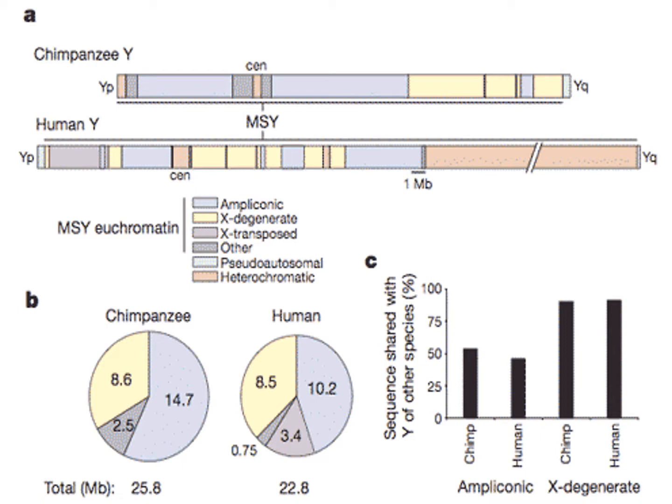Given the standard evolutionary model of origins, it is indeed rather stunning to consider that the human Y chromosome looks just as different from the chimp as the other human chromosomes do from the chicken. Obviously, the believer in mainstream evolutionary models is now forced to invent more just-so stories of major chromosomal rearrangements and rapid generation of many new genes along with vast amounts of regulatory DNA within very short spans of evolutionary time.